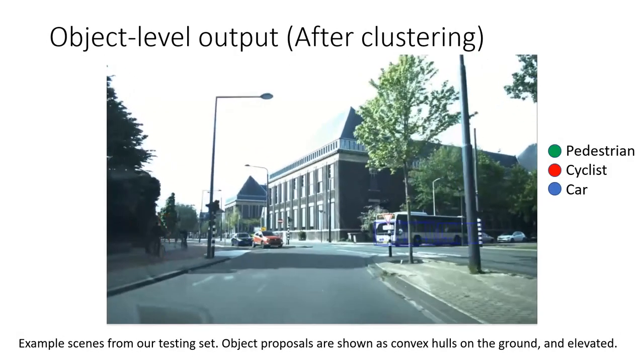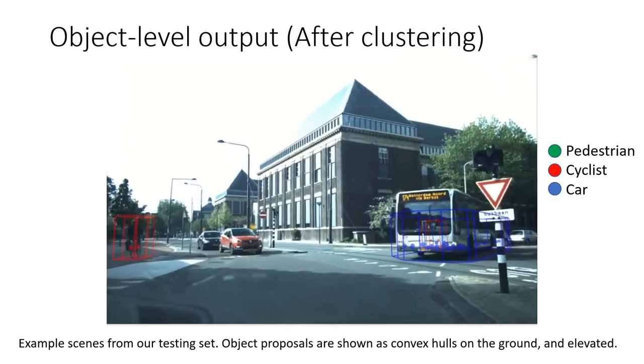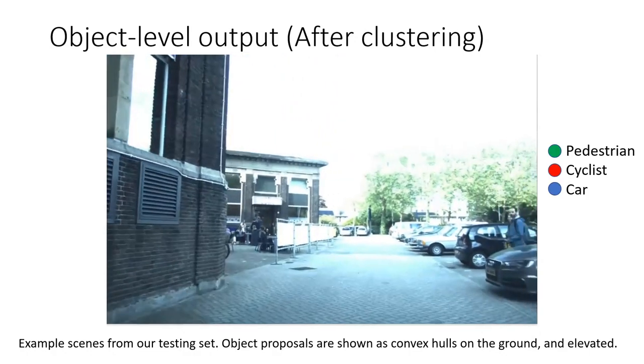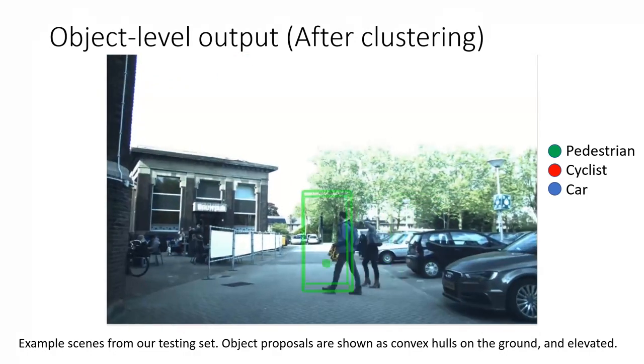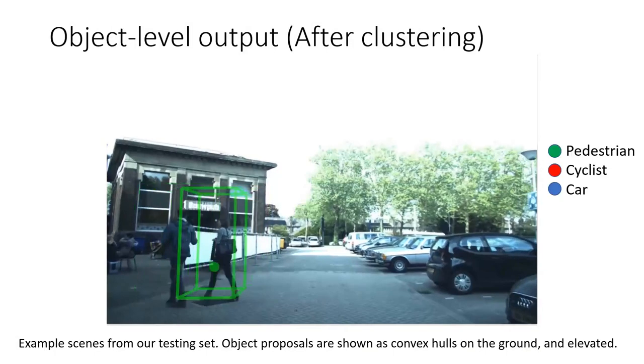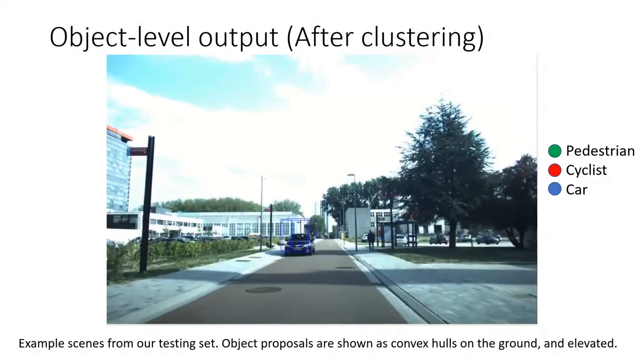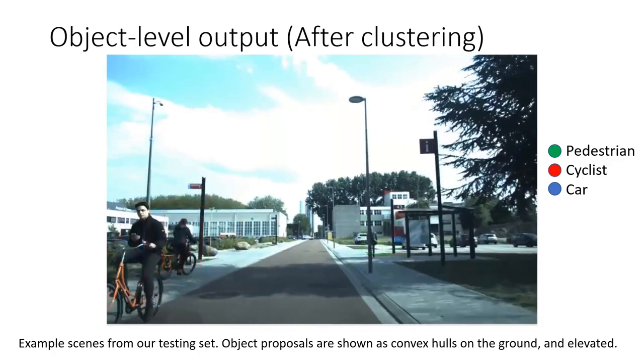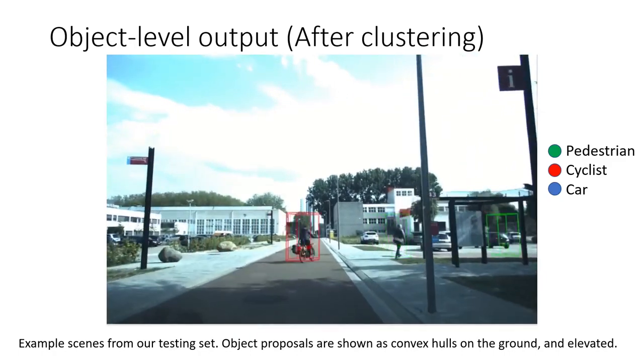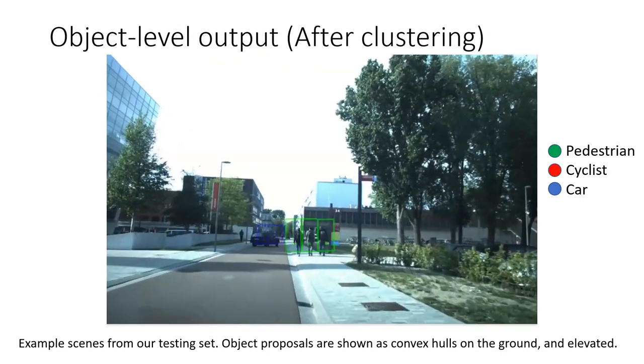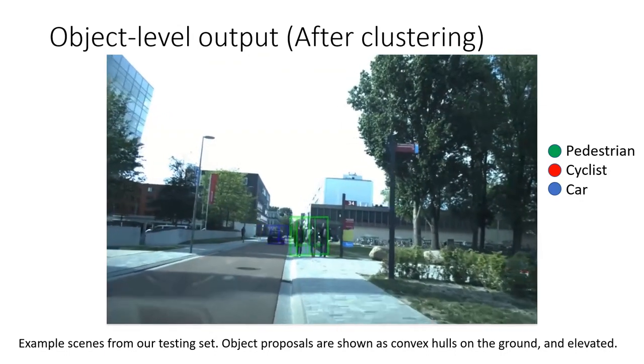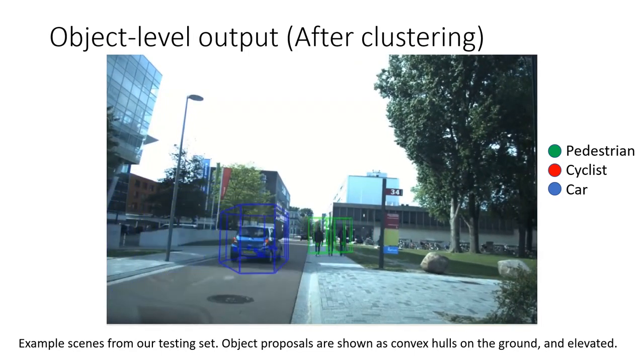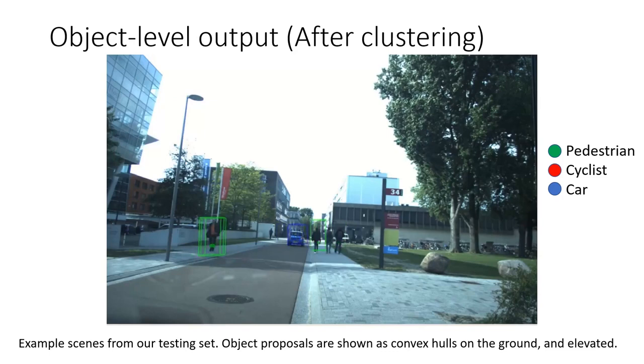Finally, let me present the object-level output of our algorithm. Here radar targets are not only classified, but clustered together into individual objects. Note that both smaller objects, like pedestrians, or larger objects, like bikes or cars, are clustered correctly. That means that we have a better idea of the size and position of objects. In front of our ego vehicle, there are three pedestrians correctly classified and divided into three objects. There is one crossing the street, and there are cars and bikes passing our ego vehicle.